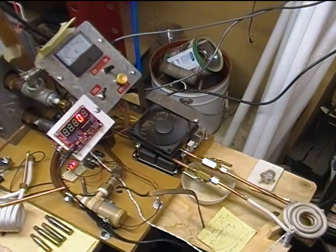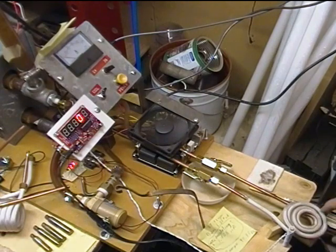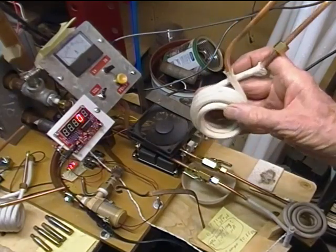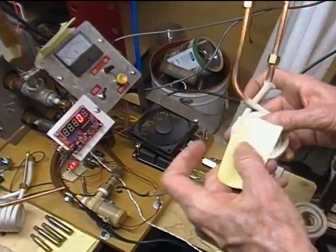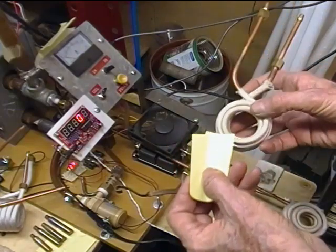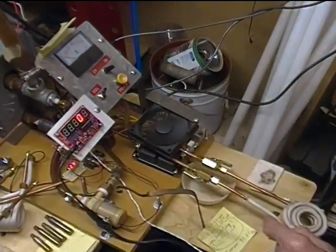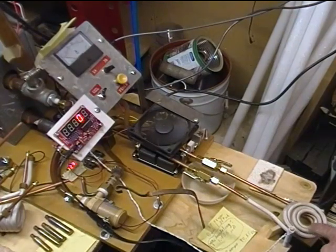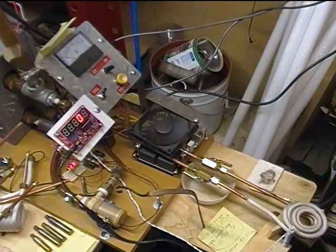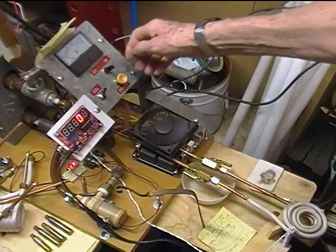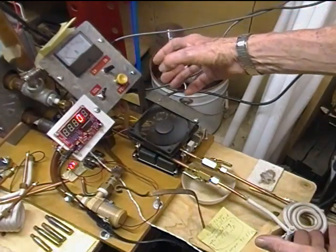So today we're going to be testing a two turn three layer coil. A few days ago we tested a three turn two layer coil. That one had 1.274 microhenries of inductance. This coil has 1.426 microhenries of inductance. I've created a spreadsheet about this that I'll publish somewhere along the line or make a link in the description. So let's get on with it.